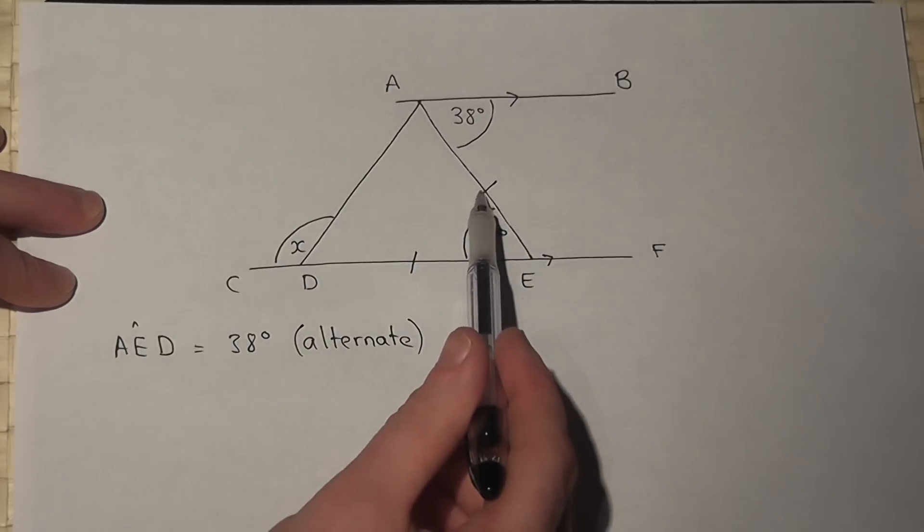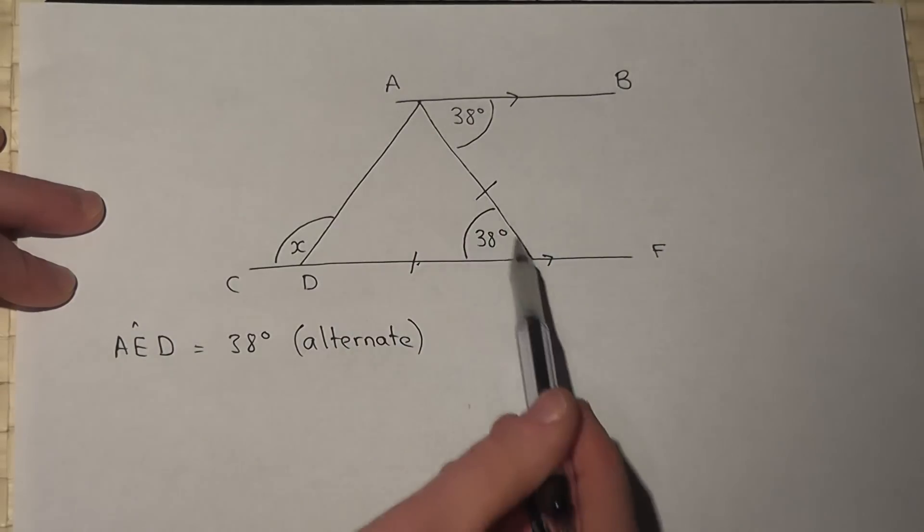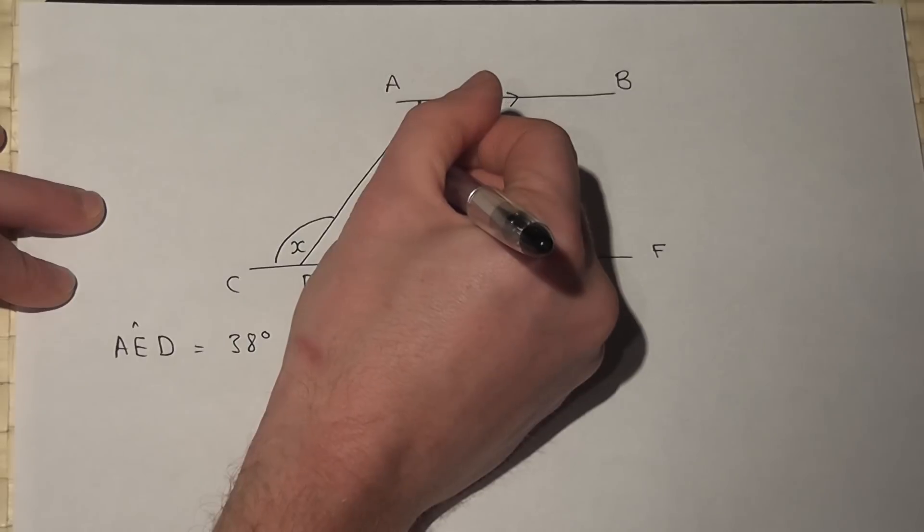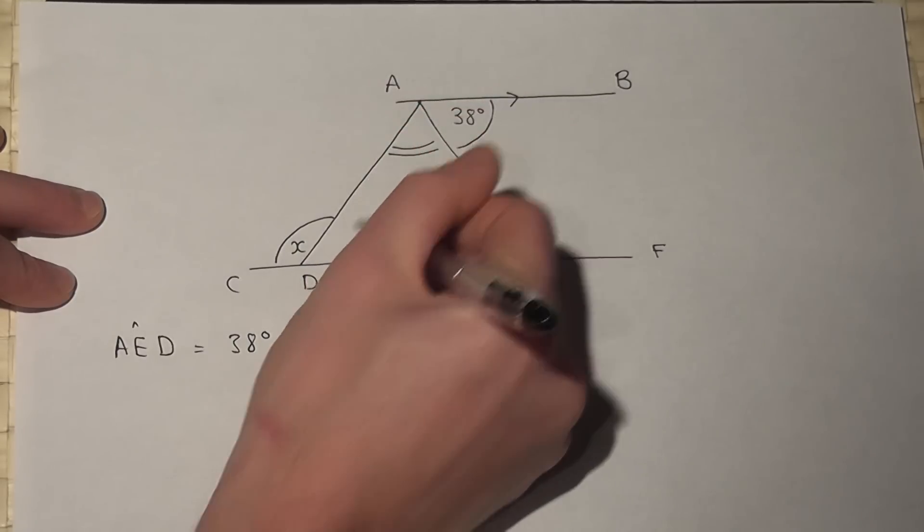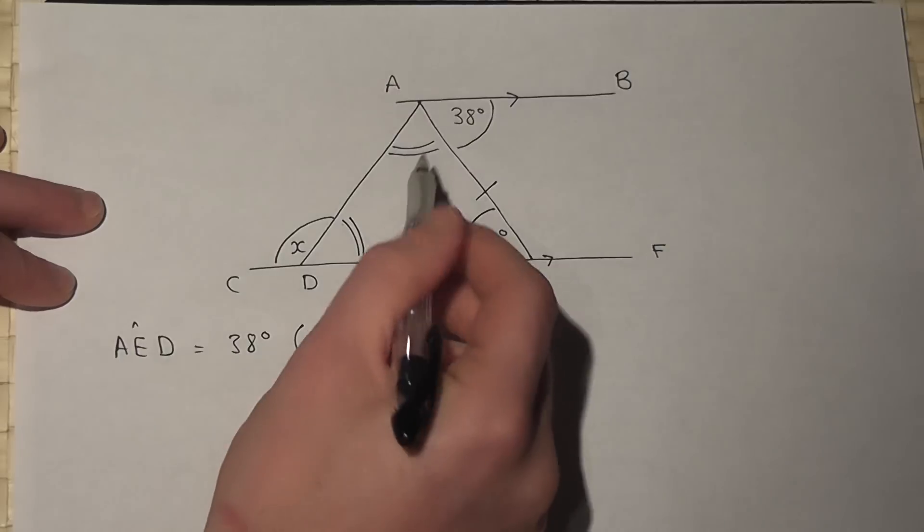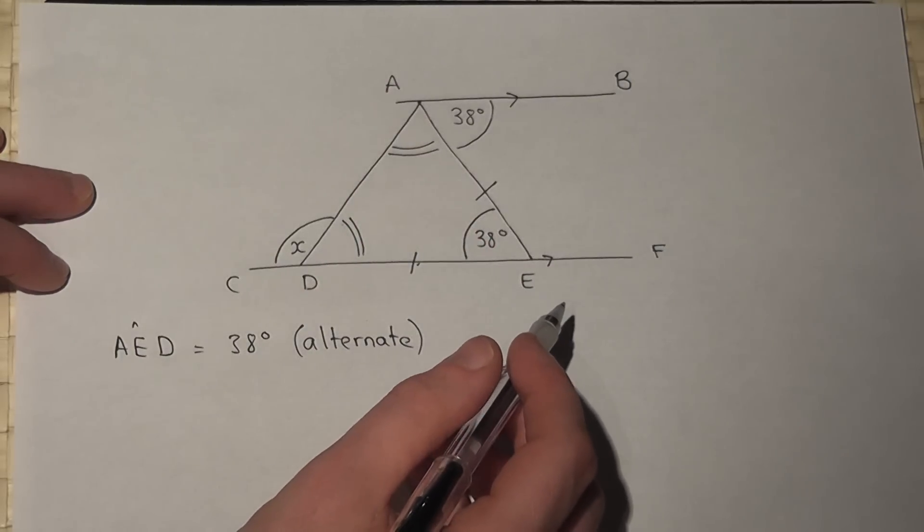I then notice these two dashes. This means that line and that line are the same length. So this is an isosceles triangle. I can therefore find out what these two angles here are because if those two lines are the same, then those two angles there must also be the same.